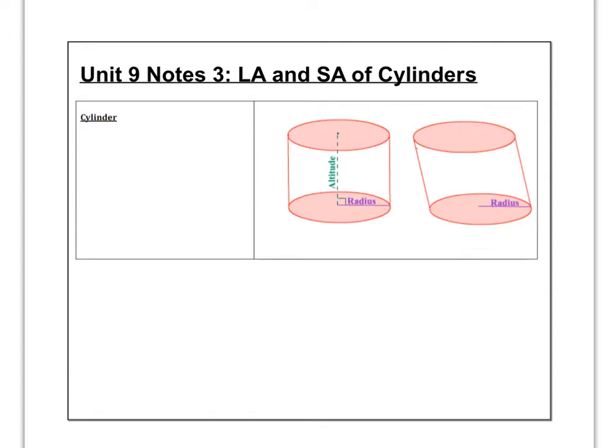We're going to find lateral areas and surface areas of cylinders. And you can see these two shapes here are cylinders. This one on the left would be considered a right cylinder, and the one on the right would be considered an oblique cylinder.